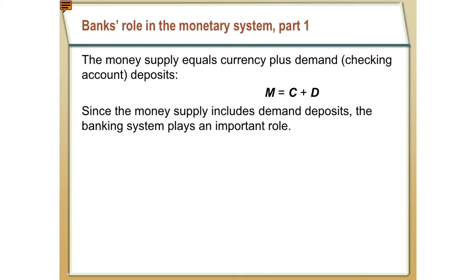Based on those definitions, we can see that banks are an important piece of the puzzle when talking about the monetary system and money supply. In M1 and M2, it's not just currency that's part of the money supply, but also our demand deposits like checking accounts. The money supply M is equal to currency plus deposits — C plus D. That's the simple connection between banks and the money supply.